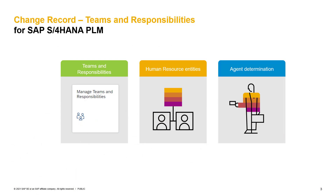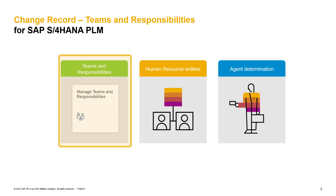In general, we have two possibilities in the process route to define team responsibilities. The first option is to create teams in the Manage Teams and Responsibilities app. Here you can define team definitions like, for example, connecting teams to a special change record type. You can define team owners, team members, team functions, as well as sub or super teams.